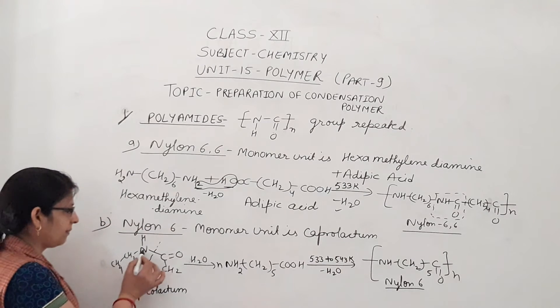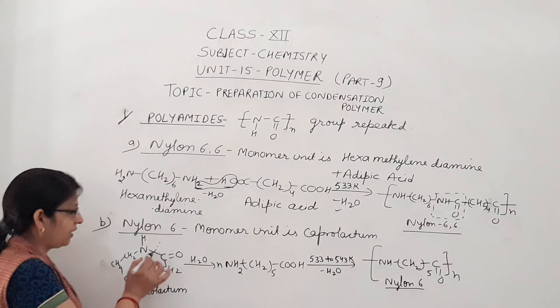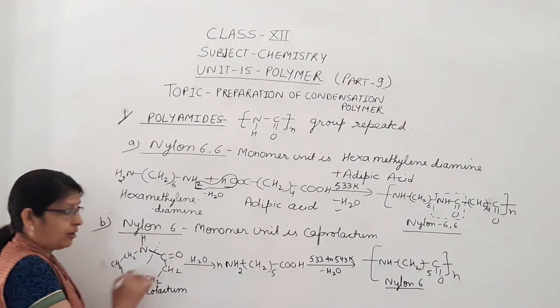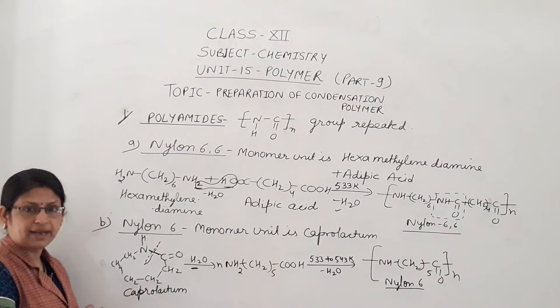What is caprolactam? NH-CO-(CH2)5. But here a bond is present. When we take water, then dissociation of this bond takes place. H combines to NH group and OH combines to CO group.